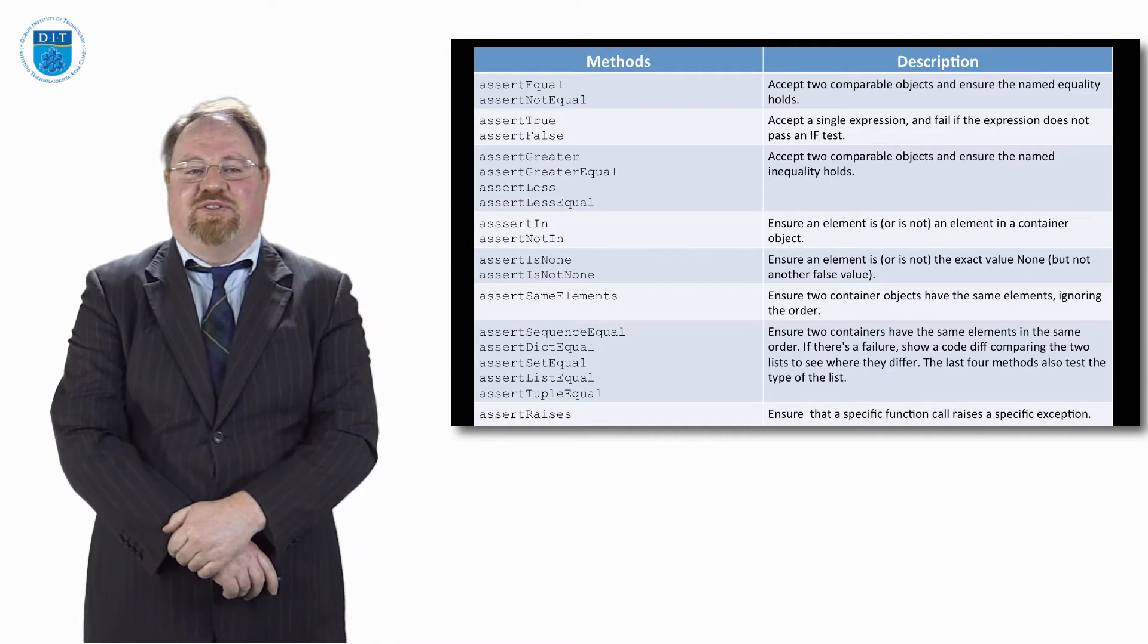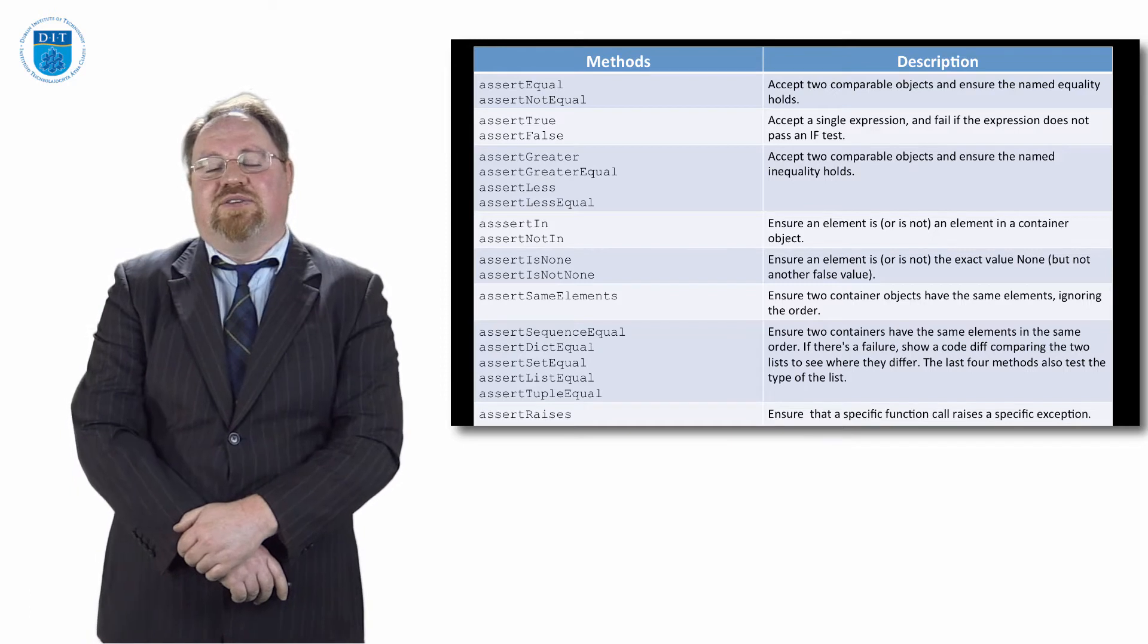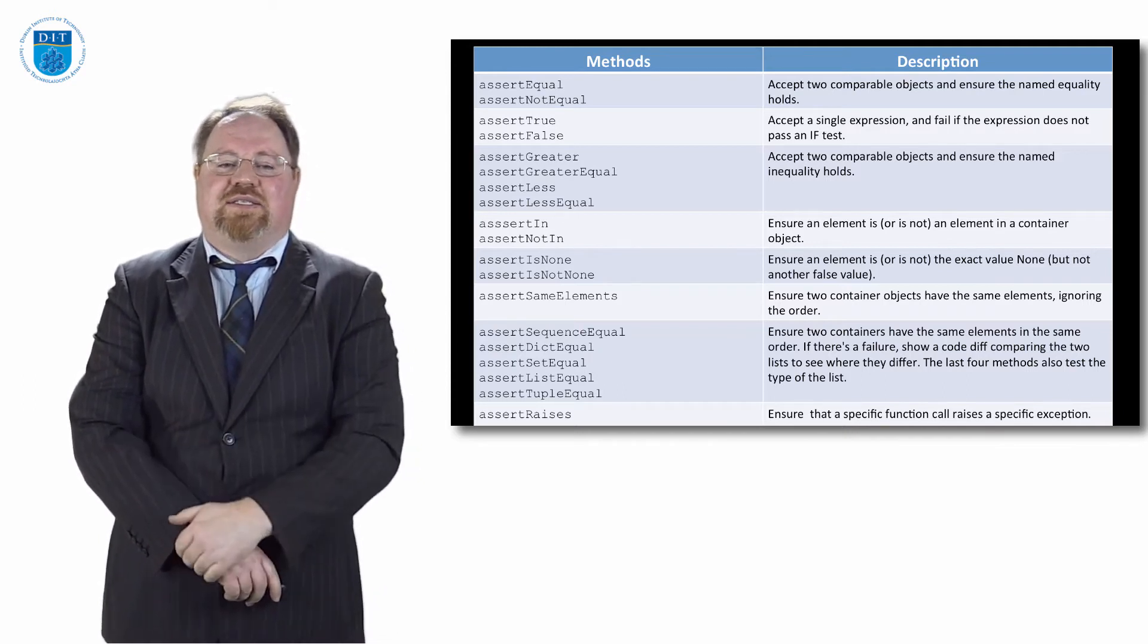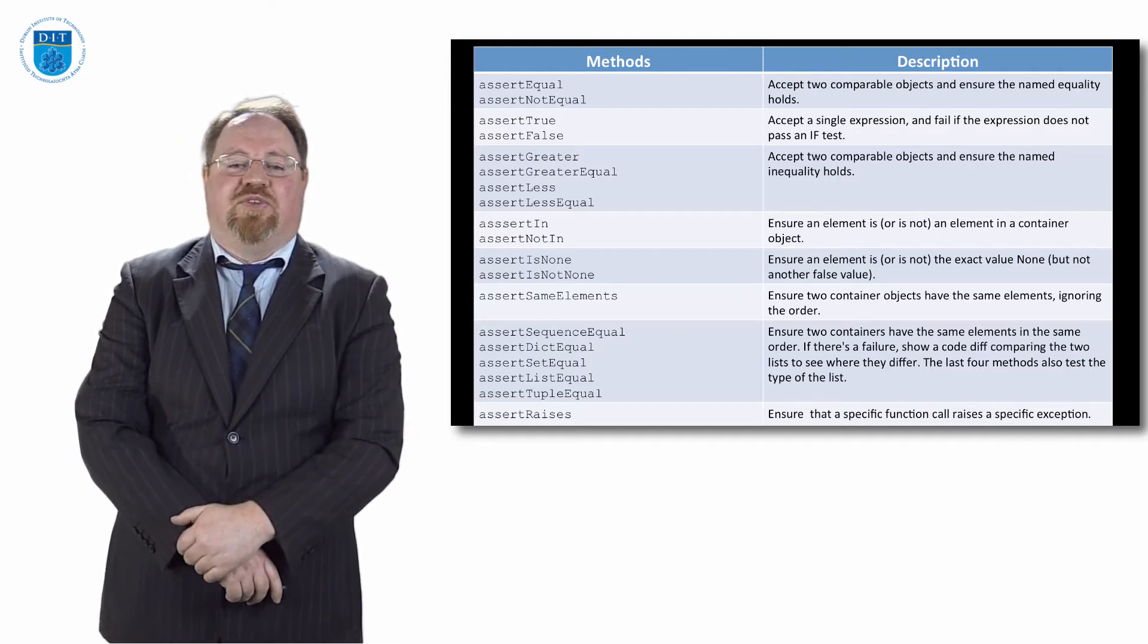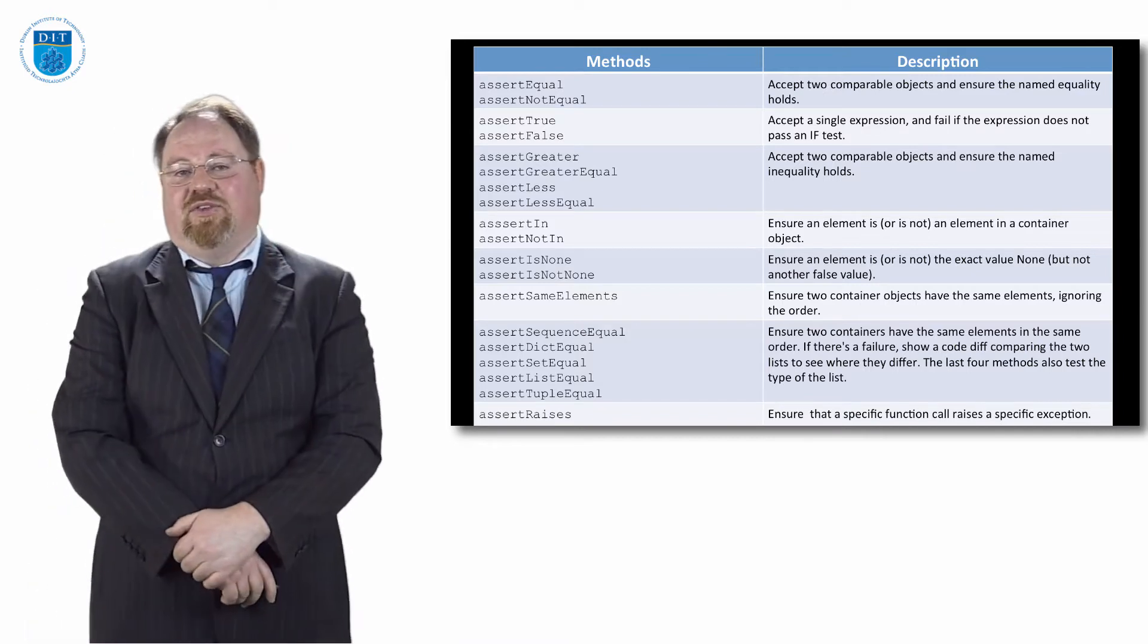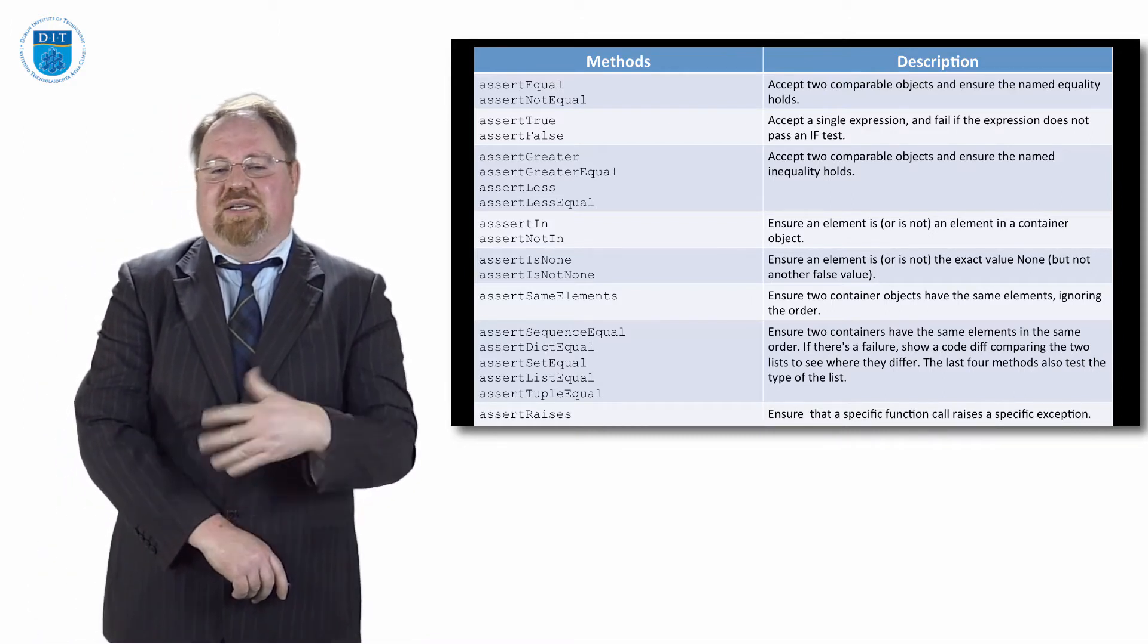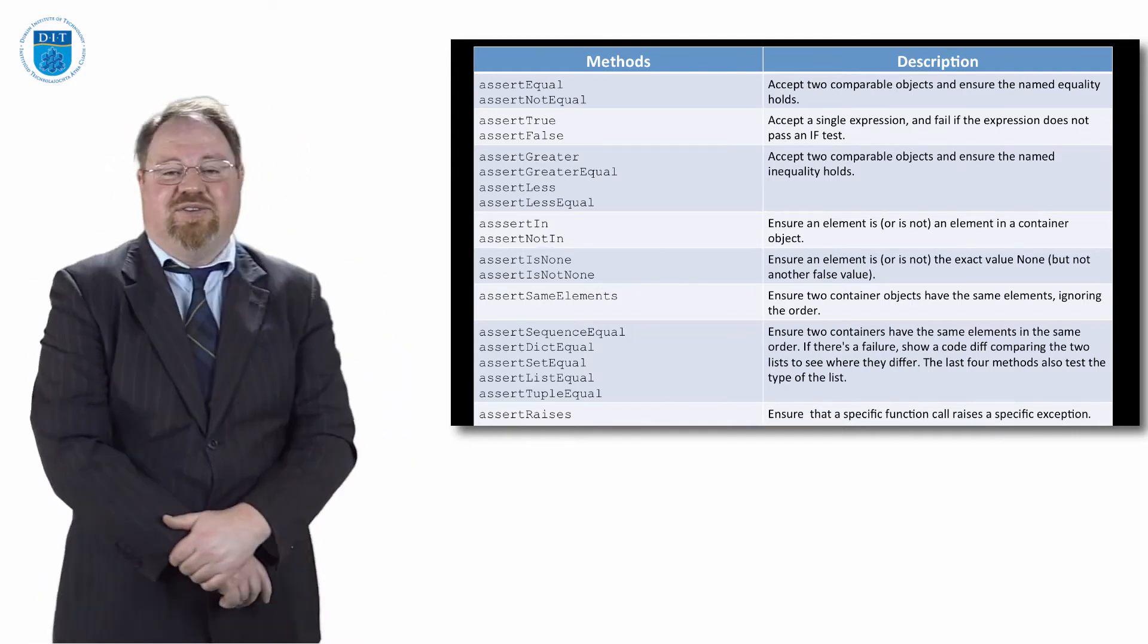In fact look there's a whole table of assertions here. For completeness I've put in the two sets we've already talked about: assertEqual, assertNotEqual, assertTrue, assertFalse. We've also got something is greater than or greater than or equal to, assertLess or assertLessEqual. We've asserted that a value is in a container or not in a container. We've asserted that a value is exactly None or not None. We've asserted that two containers have the same set of values in them even if they're not in the same order. We've asserted a sequence is equal, a dictionary is equal, a set is equal, a list is equal, a tuple is equal. And we have another one called assertRaises.